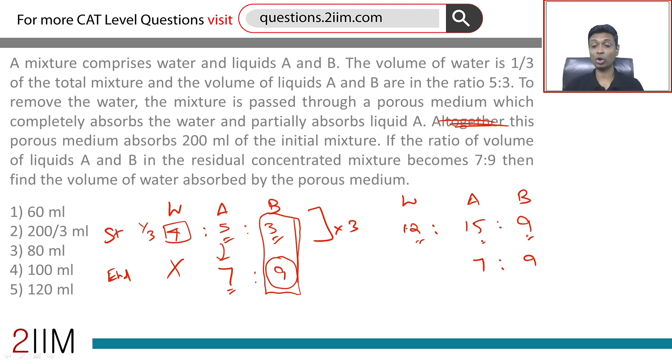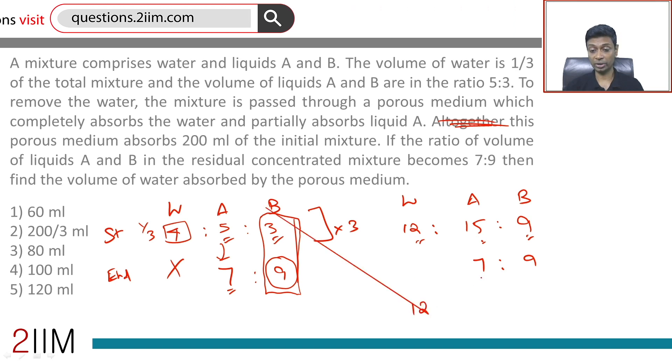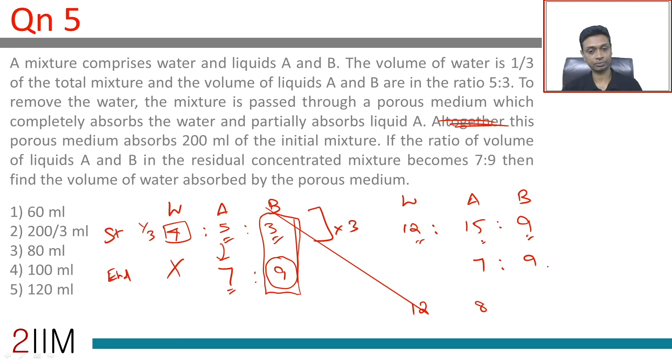We drain off 8 units of A, and then we get to this point. This is 200 ml. Twelve units of water plus eight units of A get drained out. This corresponds to 200 ml.